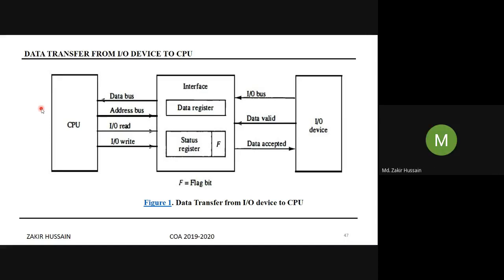The interface module acknowledges the pen drive, and the I/O device keeps transferring data. The CPU takes the data — opening a file means displaying it, not computing. The data sits in CPU memory for display. The CPU executes I/O instructions, and the ultimate destination is the memory unit. The instructor encourages students to ask questions freely, noting that asking doubts does not harm anyone and is essential for learning.